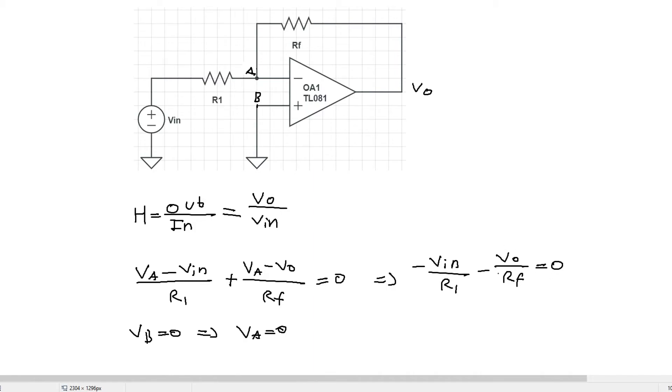So let's manipulate the equation. It says minus VO over RF equals Vm over R1. And now let's bring the voltages on the same side and the resistances on the same side. So we get VO over Vm is equal to minus RF over R1.